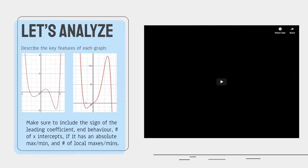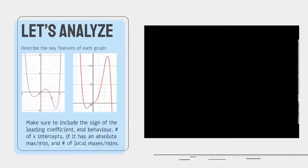Looking at the graphs: here we have one, two local minimums because in these areas that's the minimum value, and over here that's a local max. We can also see that this function has no absolute max because it reaches positive infinity. This other function has no absolute max because it reaches positive infinity on both sides. However, it does have one absolute minimum at this point — the graph never goes below that.